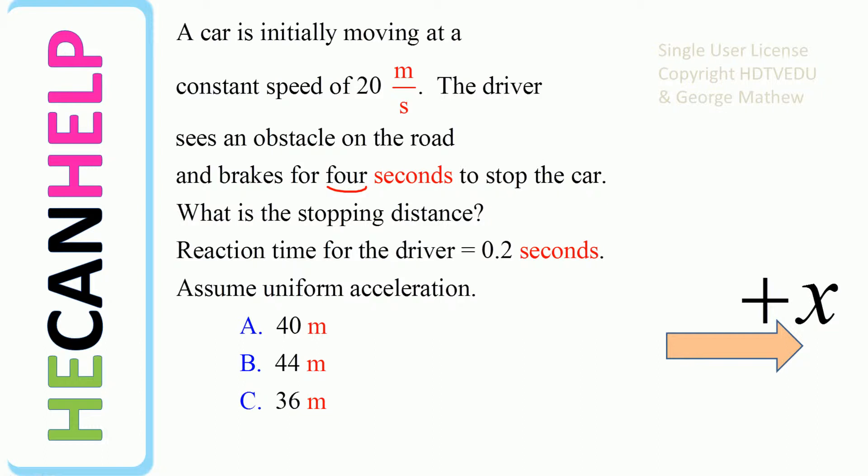Positive X is defined as to the right. Is it A, 40 meters? Is it B, 44 meters? Is it C, 36 meters?